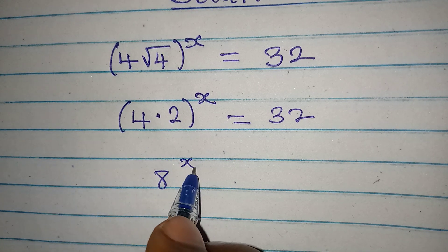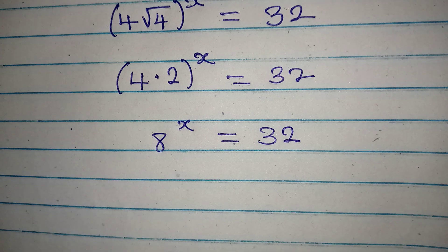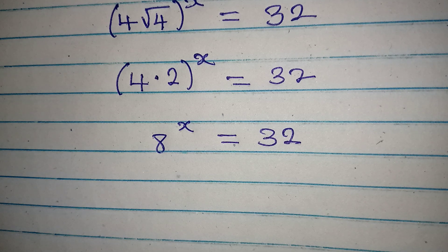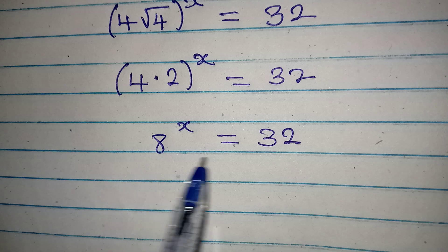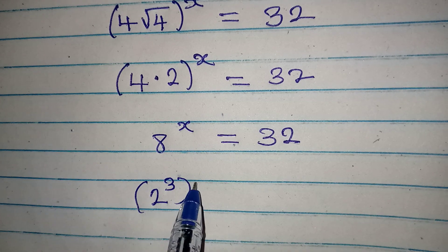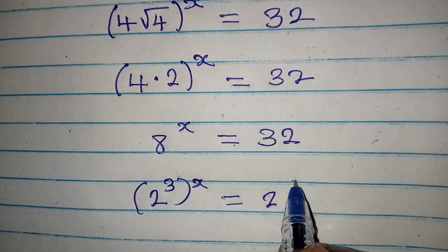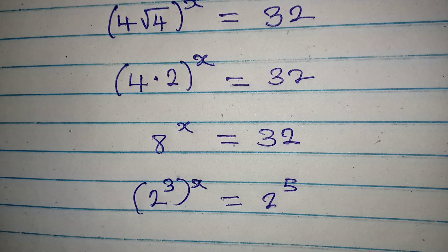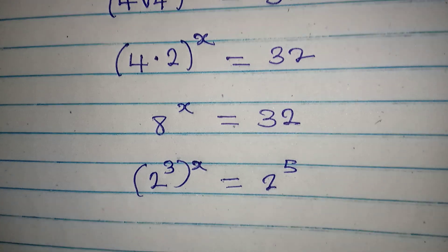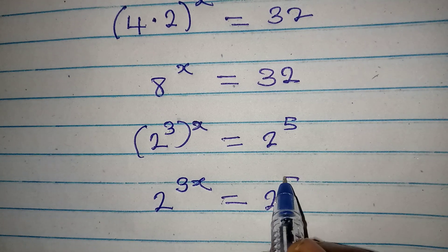Multiplying those together gives us 8 to the power of x equals 32. You might think of introducing logarithms, but there's no need because we can express both sides in the same base. Since 8 is 2 to the power of 3, we get 2 to the power of 3x. And since 32 is 2 to the power of 5, we have 2 to the power of 3x equals 2 to the power of 5.